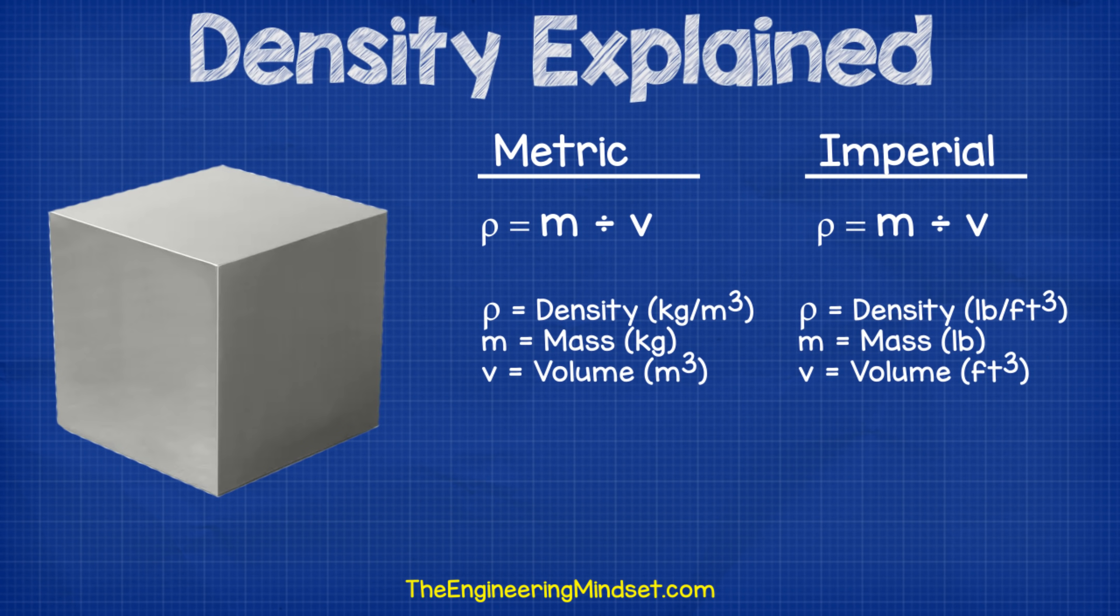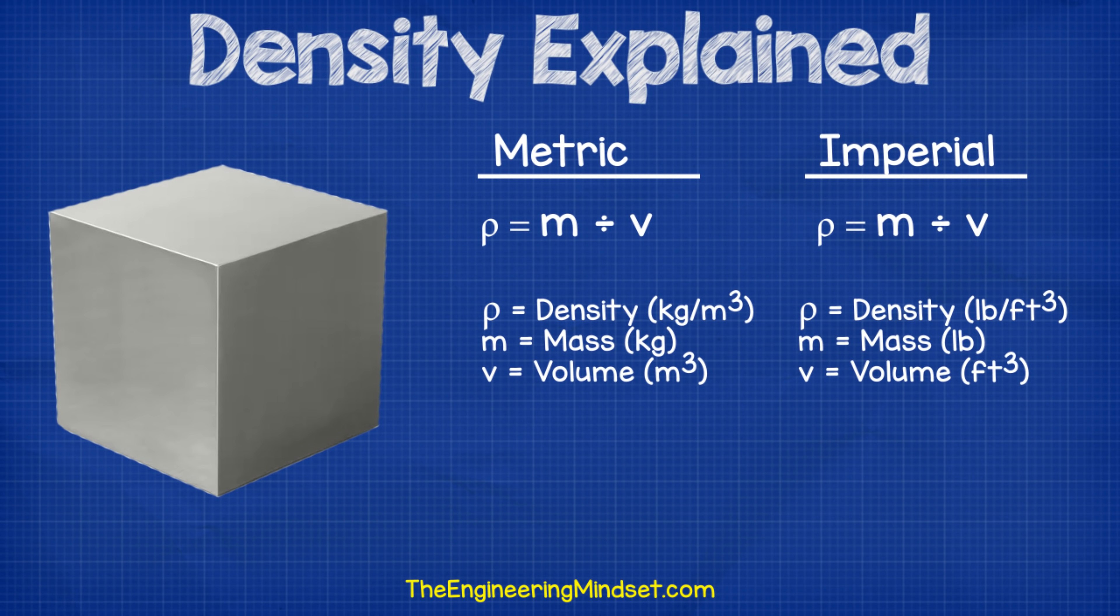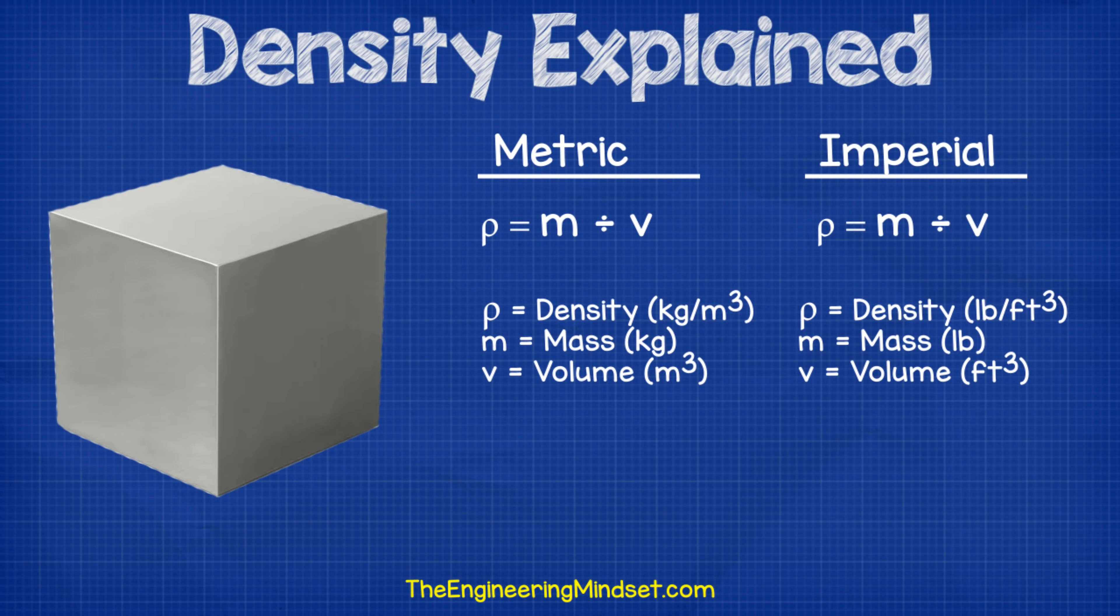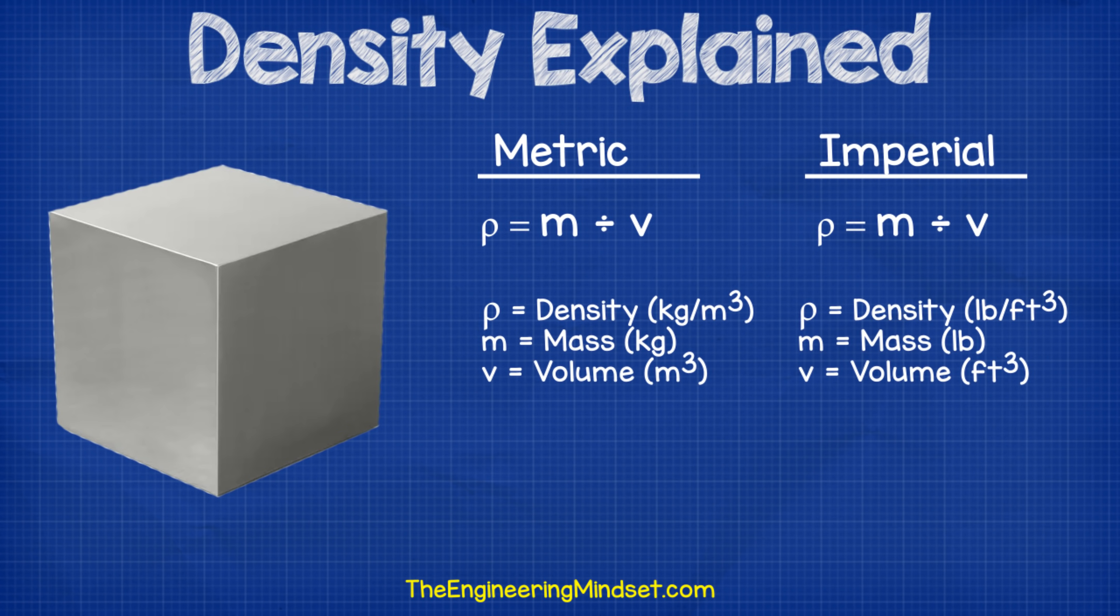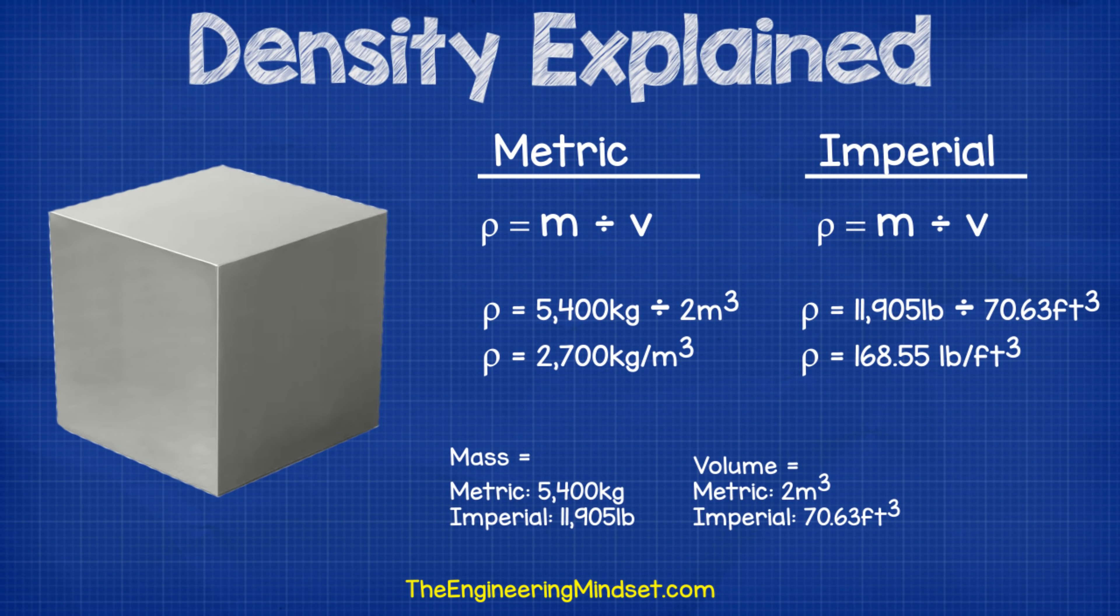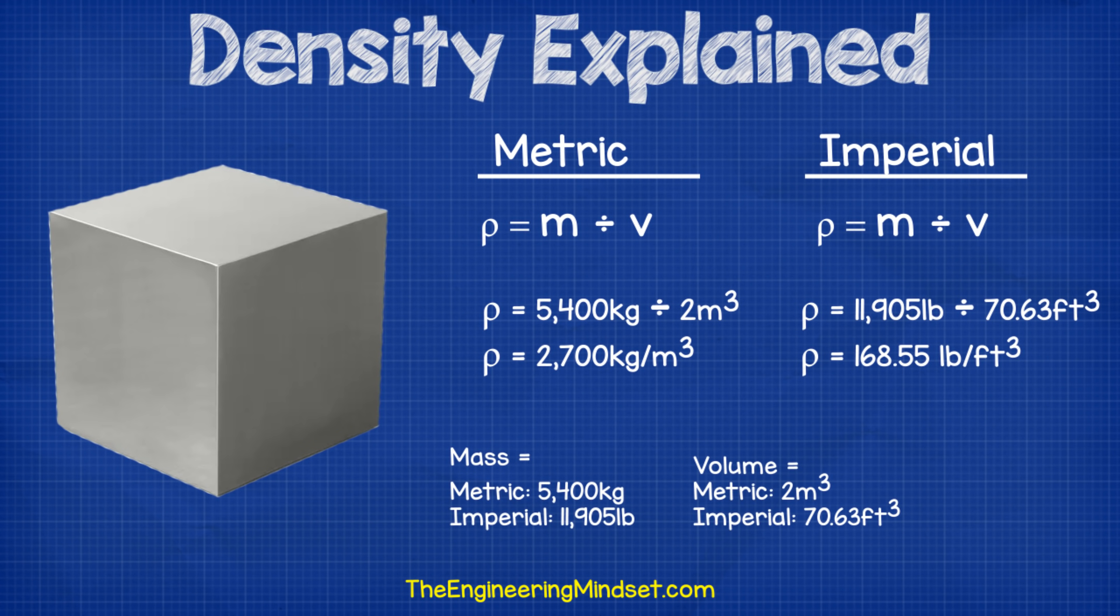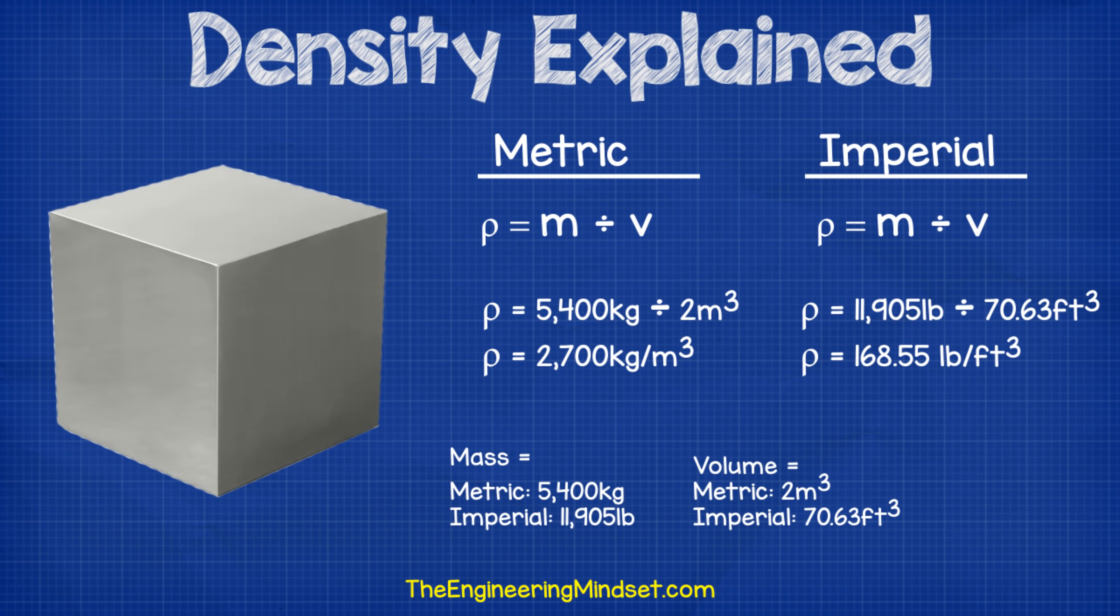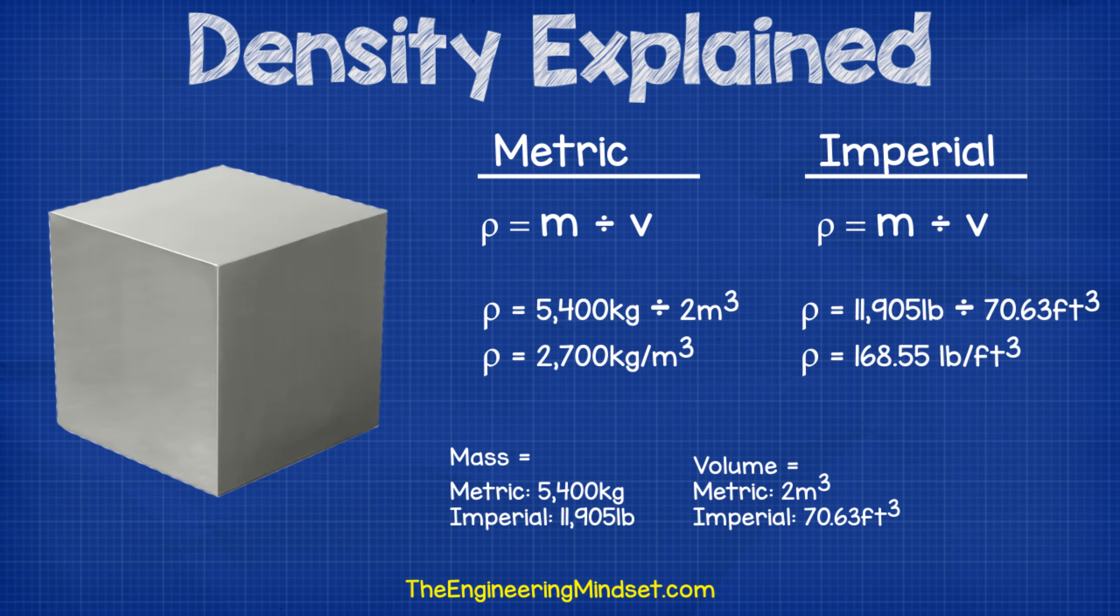Now that we have the measurements from the block we can drop these numbers straight into the formula which we saw earlier. That being rho equals m divided by v. Now rho is the density which uses the units of kilograms per cubic meter or pounds per cubic feet. M is the mass and that uses the units of kilograms or pounds. And v is the volume which uses the units of cubic meters or cubic feet. So if we drop the numbers from the measurements into the equation then on the metric side we're going to have 5,400 kilograms divided by 2 cubic meters and that will give us the answer of 2,700 kilograms per cubic meters. And then on the imperial side we'll have 11,905 pounds divided by 70.63 cubic feet. And that will give us the answer of 168.55 pounds per cubic feet.